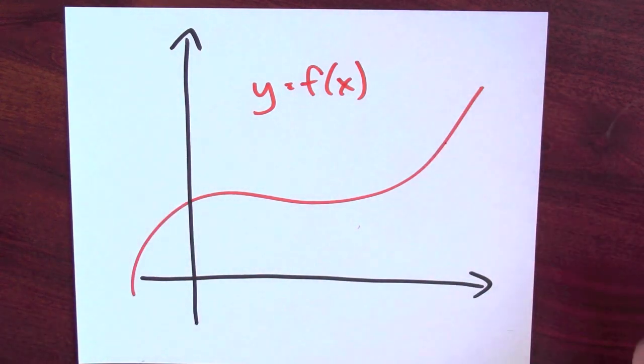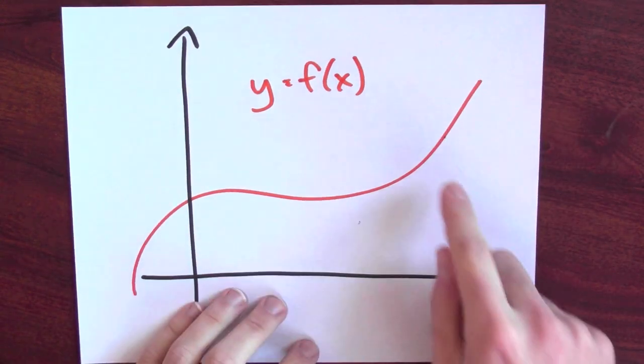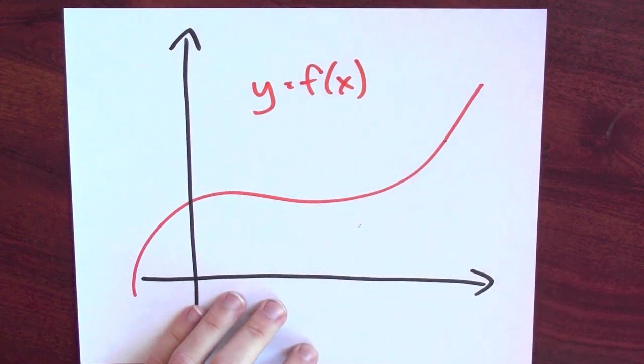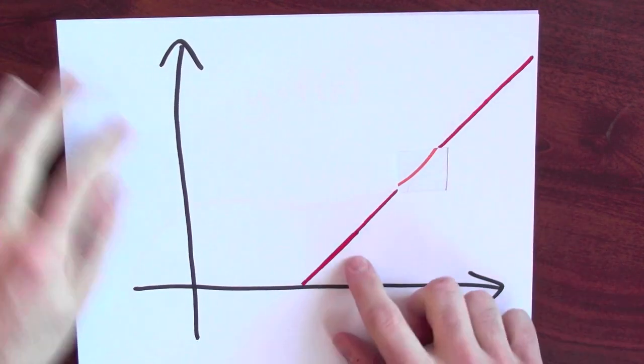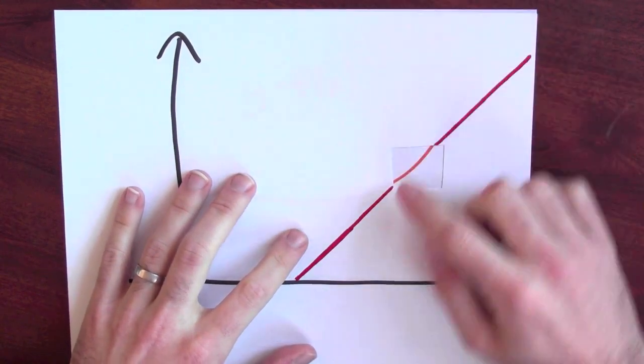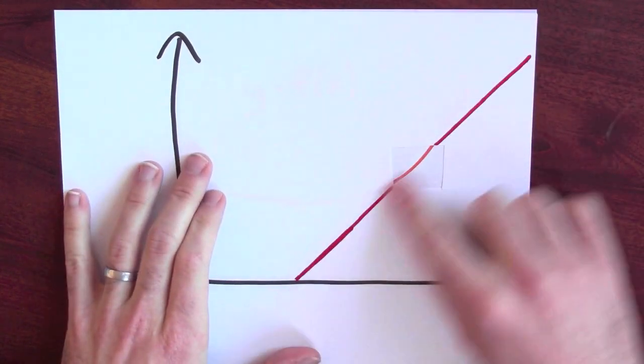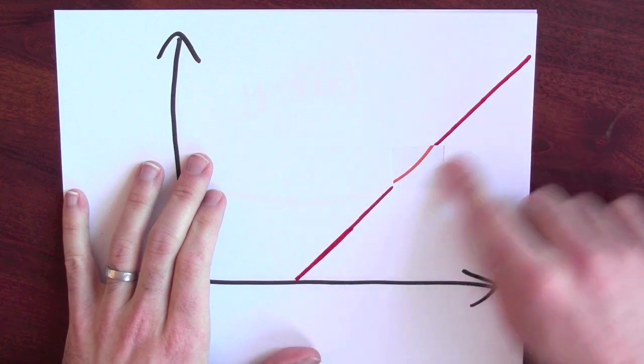Here I've graphed some function. Notice what happens if I zoom in on one little piece of the graph. If I just focus on one part of the graph, well, that little bit of graph sort of looks like part of a straight line.